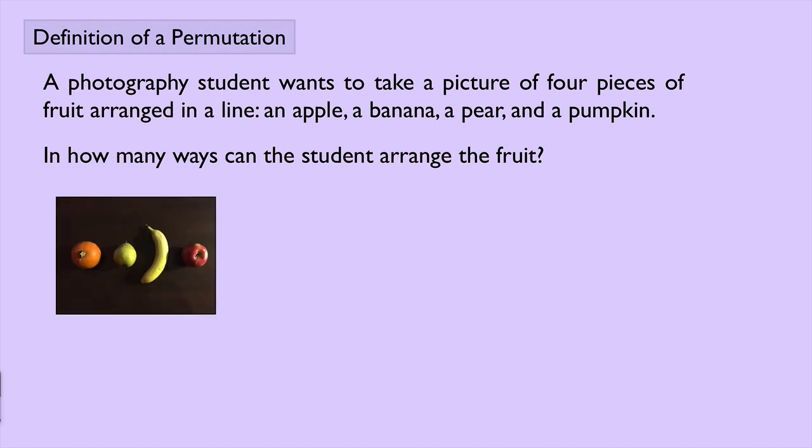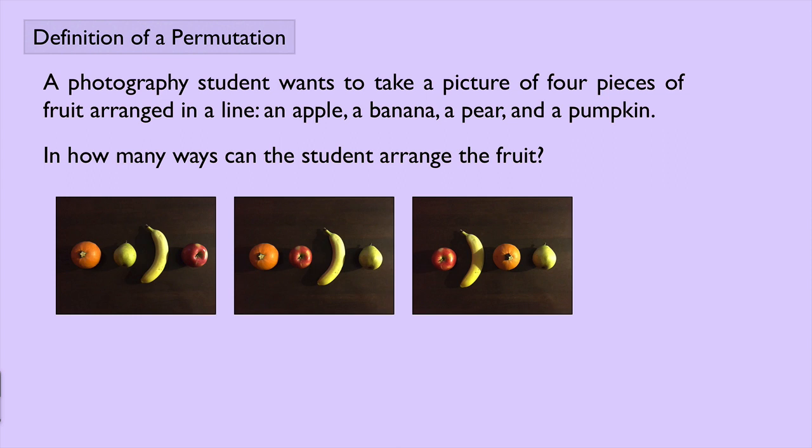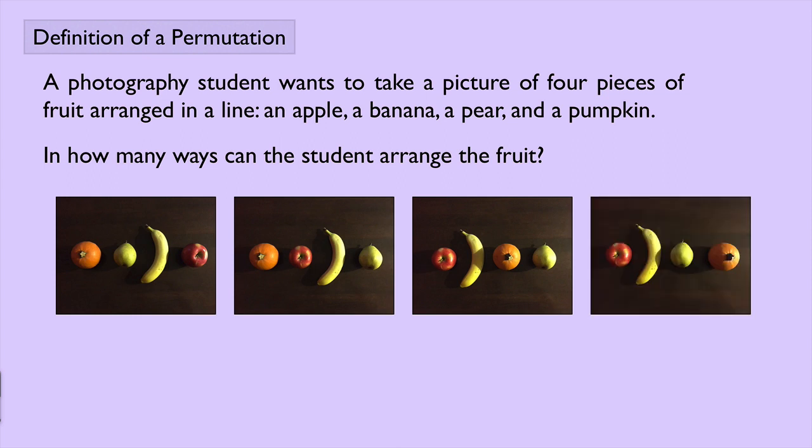We can look at some examples here. Maybe we have pumpkin, pear, banana, apple. Or maybe we have pumpkin, apple, banana, pear. Or apple, banana, pumpkin, pear. Or maybe apple, banana, pear, pumpkin. So you get the idea.